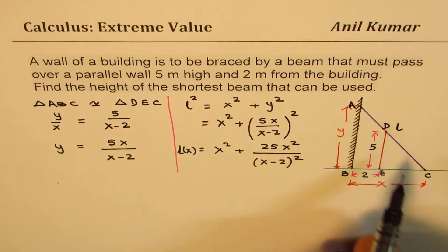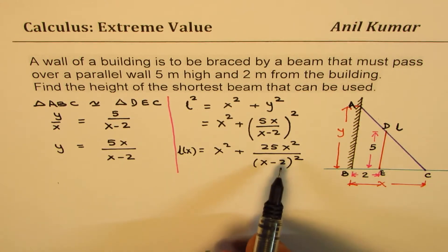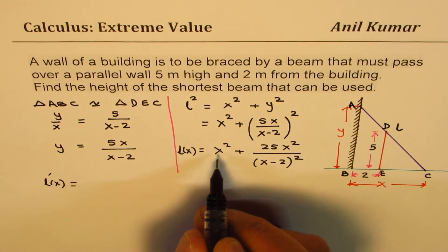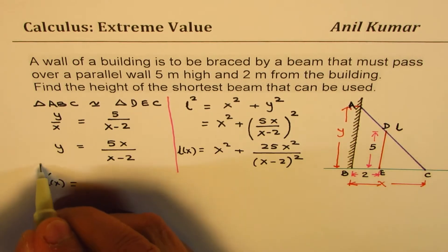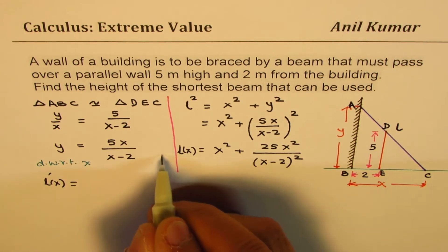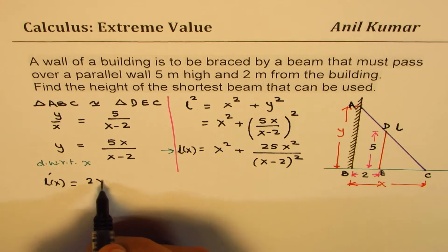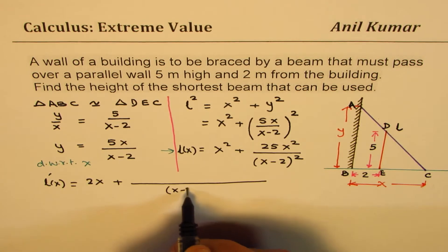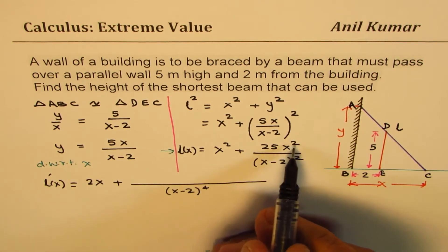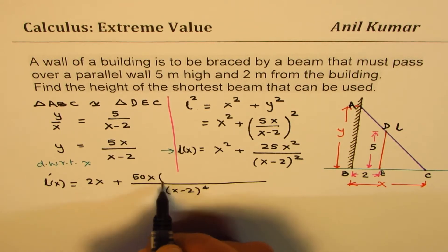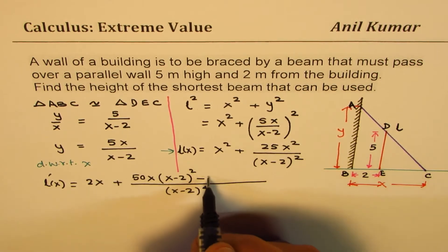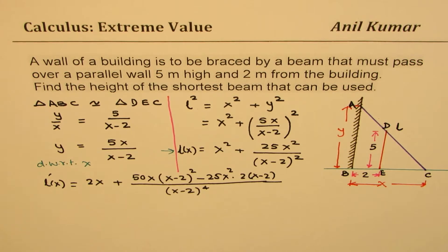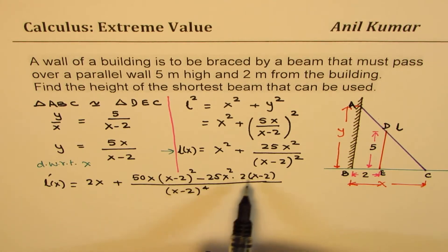It is easier to find the minimum length by finding the first derivative and equating it to zero. Differentiating L² with respect to X, we get 2X plus — since (X minus 2)² is in the denominator it becomes to the power of 4 — the derivative of the numerator is 50X times (X minus 2)² minus 25X² times 2(X minus 2).